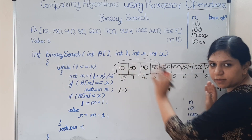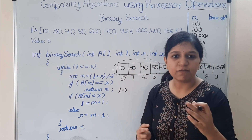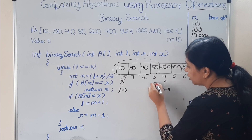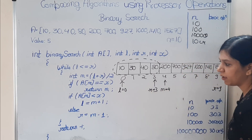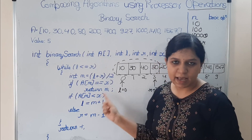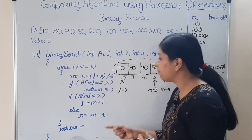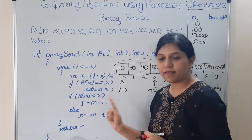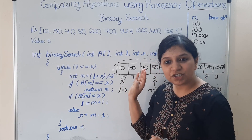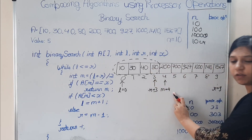Binary search shrinks the array every time. Instead of searching the complete array, we consider only the left portion. l stays the same, but r becomes 3. Programmatically: we found the middle element, compared it with x — not equal, so we check if a[m] < x. No, 200 is greater than 5, so we go to the else branch and set r = m - 1 = 4 - 1 = 3. Now l is 0 and r is 3.